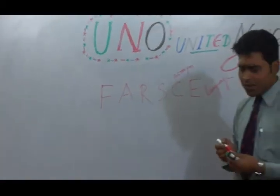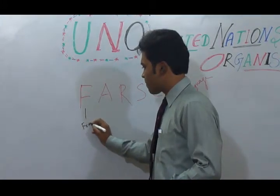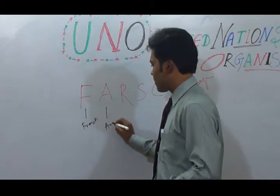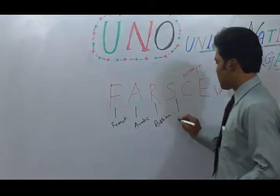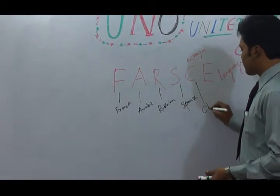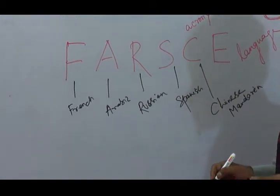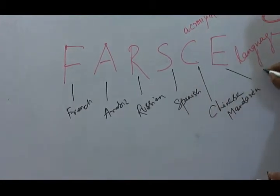What is FARSCE? F stands for French. A stands for Arabic. R stands for Russian. S stands for Spanish. C stands for Chinese — actually, Chinese Mandarin. Chinese Mandarin is the most widely spoken language in the world, as China has the highest population. And E stands for English.